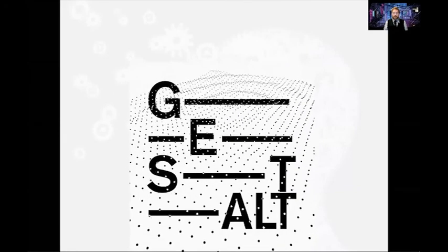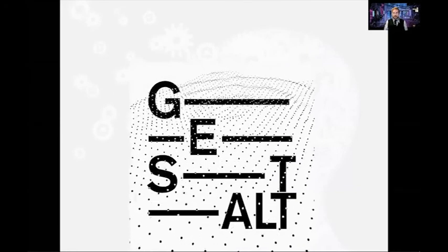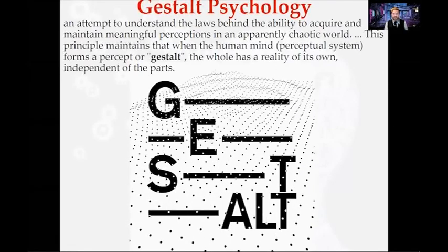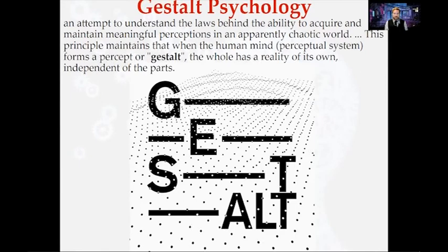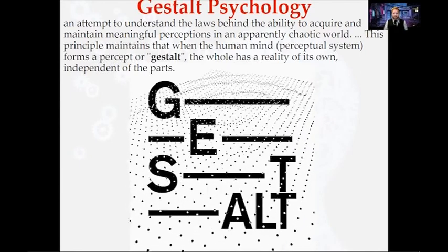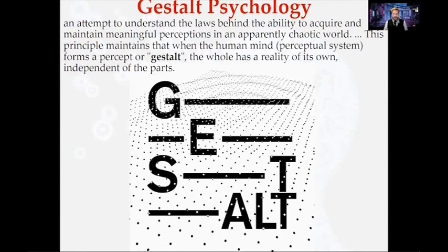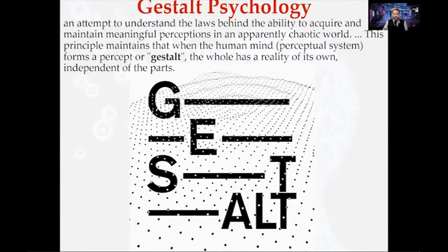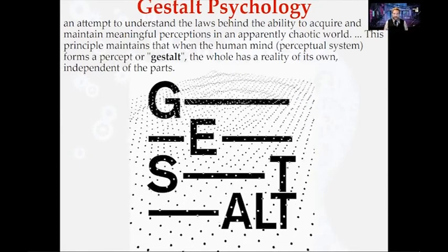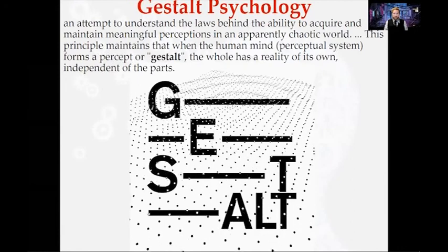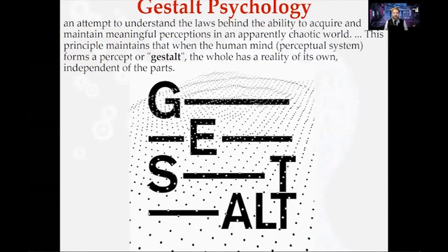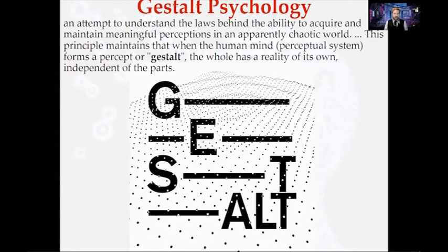When we talk about perceptual organization, it's first important to understand what's called Gestalt. Gestalt psychology is an attempt by German psychophysicists to understand how we perceive our reality and the laws behind it — how we take any sensory information and organize it from our chaotic world. It basically means the whole has a reality of its own, which is independent of its parts.